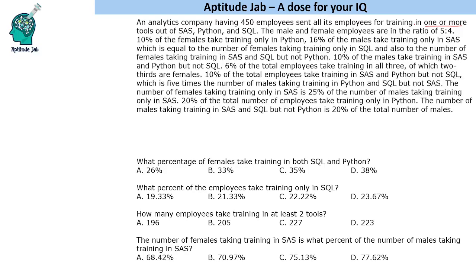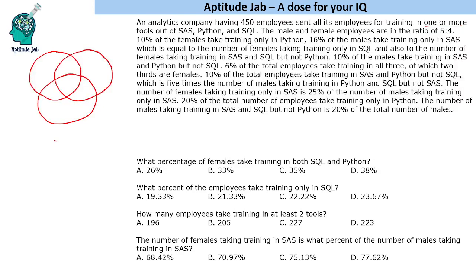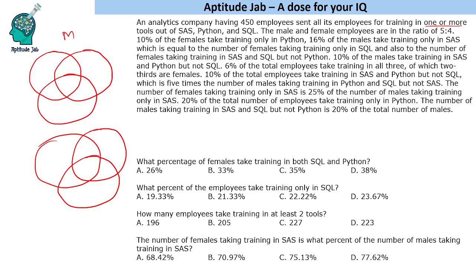The male and female employees are in a 5:4 ratio, and 10 percent of the females take training only in Python. From this we can make out that it's a double Venn diagram — one for males and one for females. So there are 250 males and 200 females. The three tools are SAS, Python, and SQL, placed in each Venn diagram.